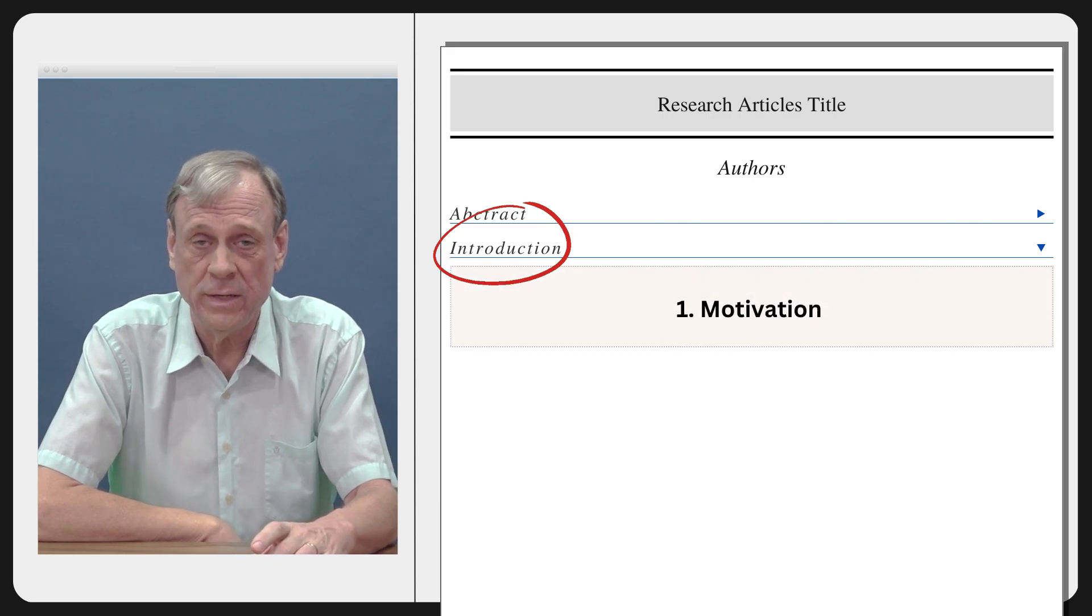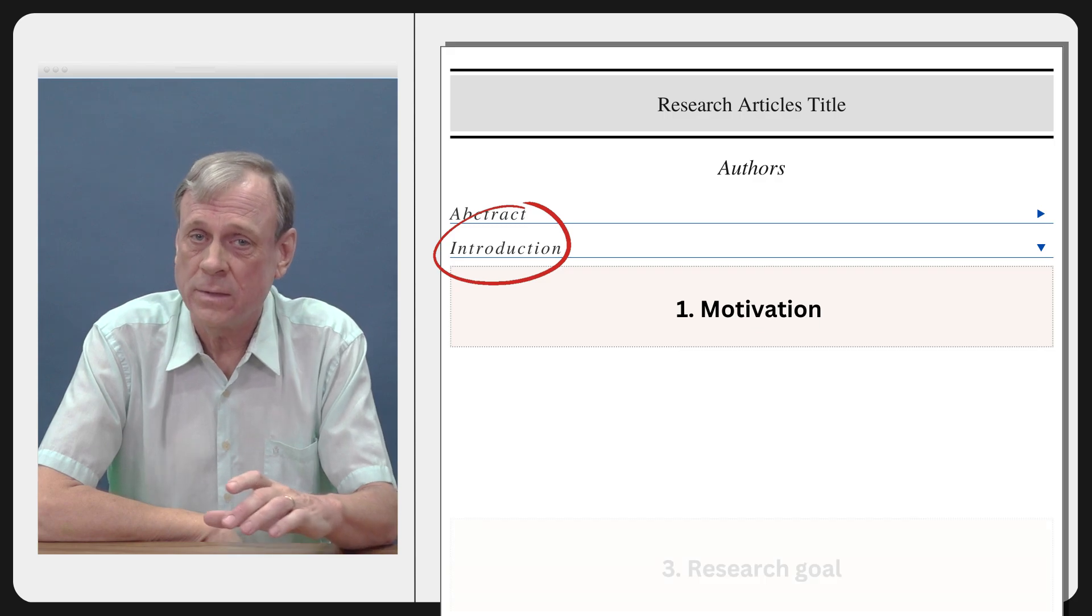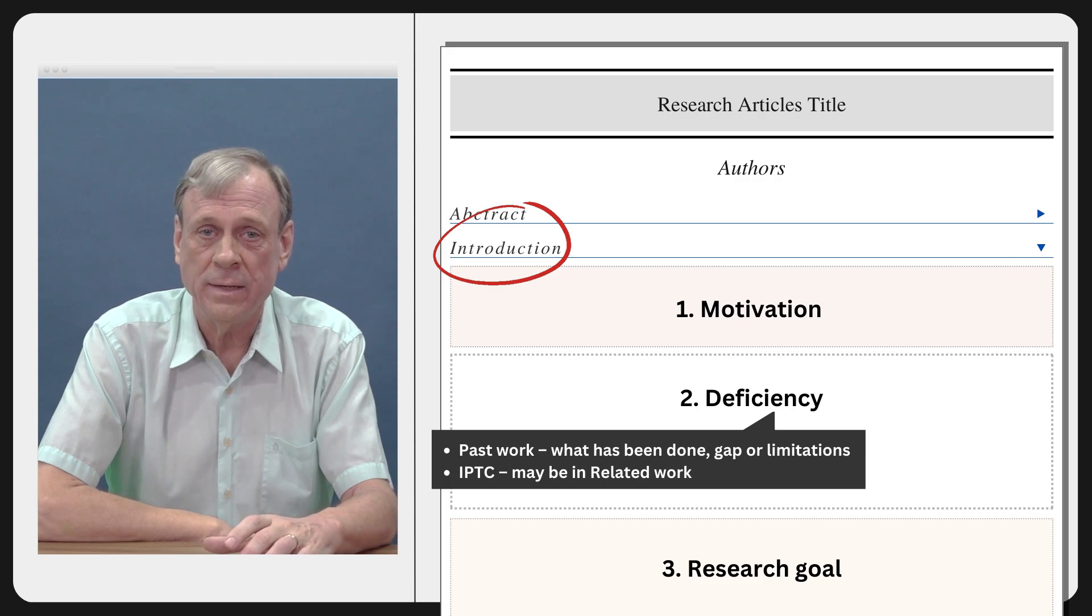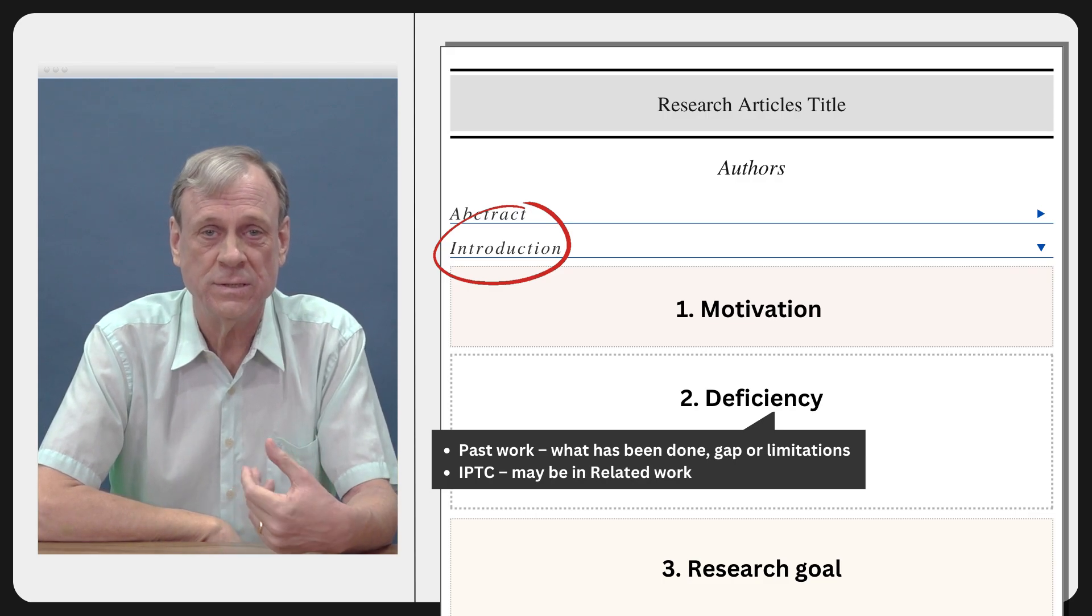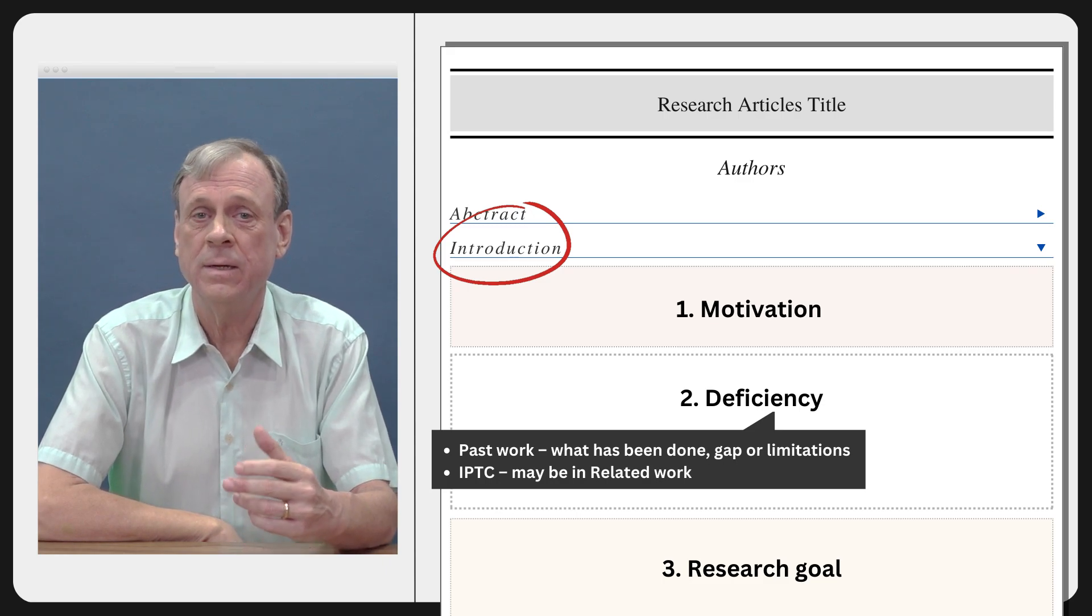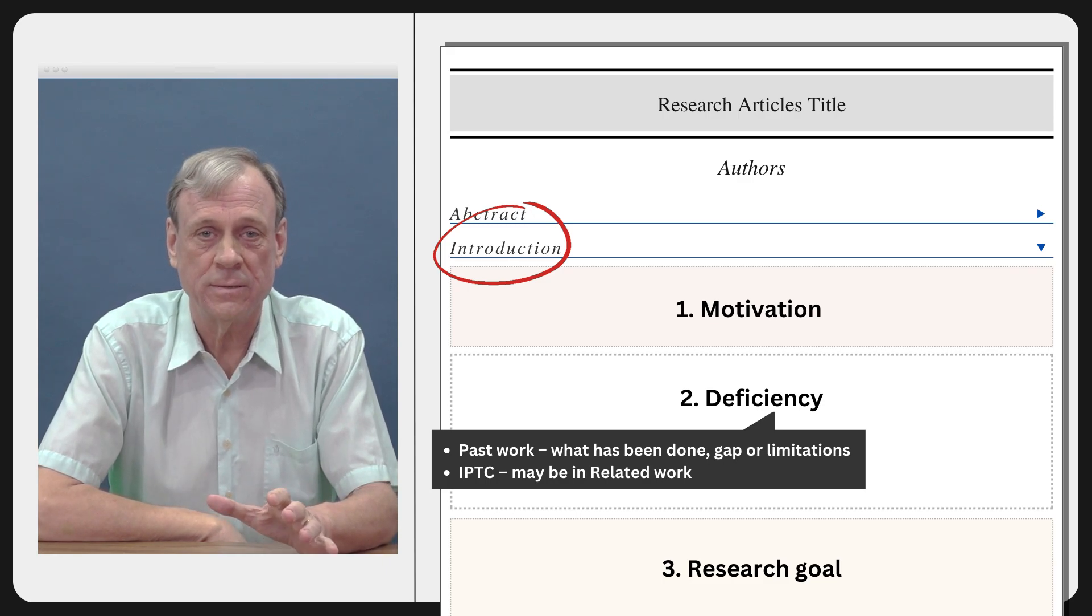The first paragraph, sometimes the first two paragraphs, are usually the motivation for the study. The last paragraph in the introduction is almost always the research goal, the contribution of the study. And then in between that is where you find the deficiency, the limitations, the research gap, the previous work that's been done but there's still something missing.